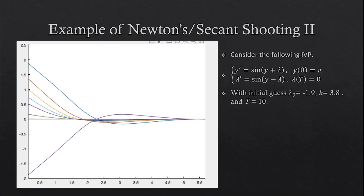For this next simulation, we will take the secant method direction, meaning we have no restriction on h. Here, we will be using the following nonlinear system of equations, with our initial guesses being negative 1.9, and h — technically our second guess — will be 3.8, and t will equal 10. As you can see from our graph, we shot from negative 1.9 and at 1.9. So why is it 1.9 if we chose 3.8 as h? Remember, we will be using the finite difference approximation, which adds lambda of 0 plus h. This time, the trajectory of our shots was closer than the last example. Even though we had two initial guesses, it still converged to 0. We can see that at each iteration it's getting closer and closer to our target of 0.